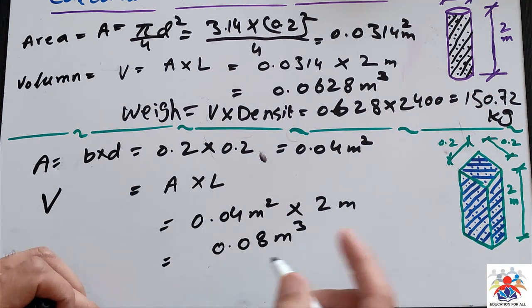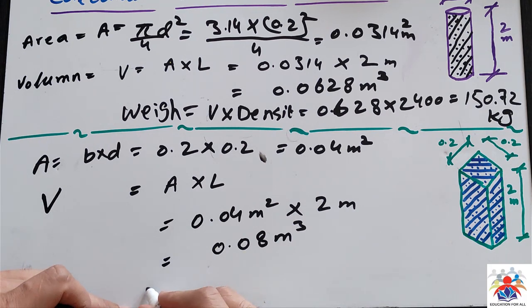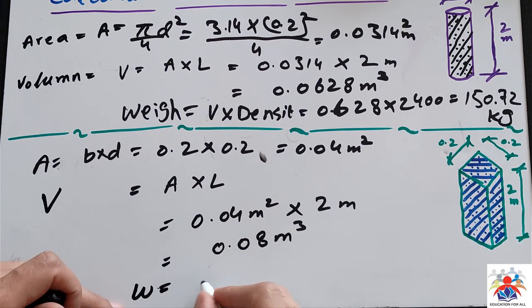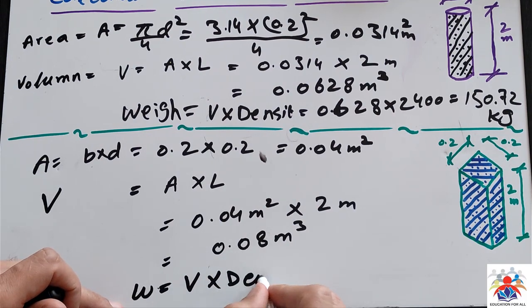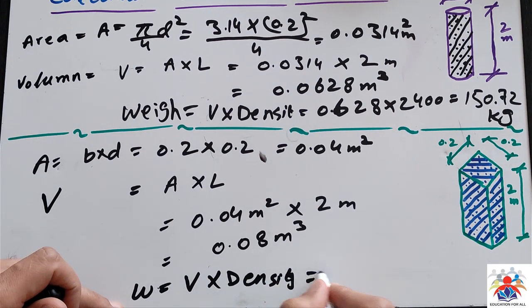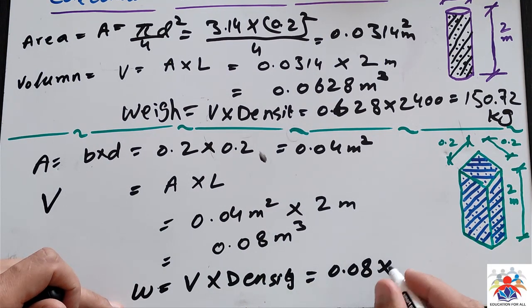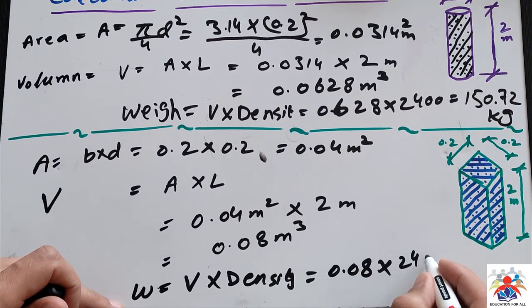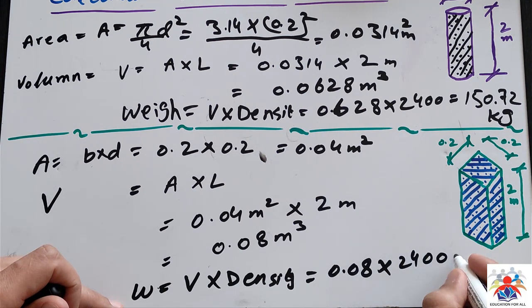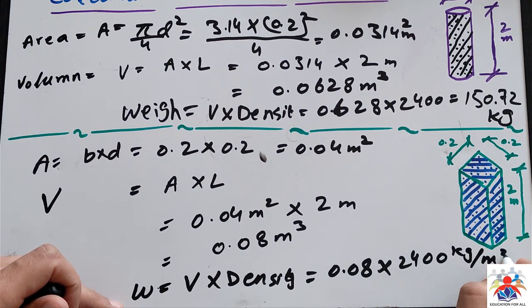Now we do the same thing for our square column. The weight is volume multiplied by density, so the volume is 0.08 × 2400 kg/m³, and we get the final answer: 192 kilograms.